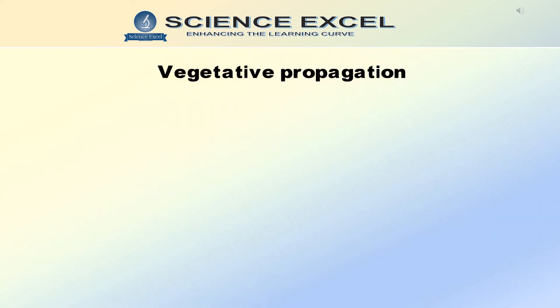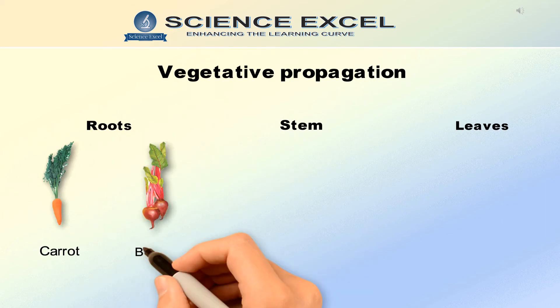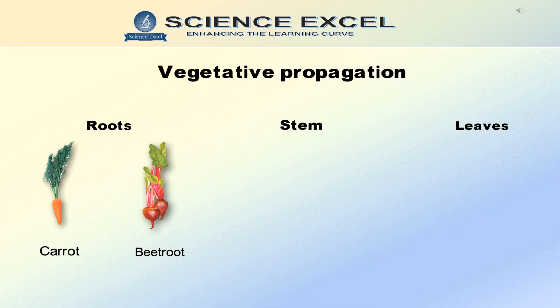Vegetative propagation takes place with the help of vegetative parts of the plant like the root, stem, leaf, and bud. Roots like carrot and beetroot are also known as modified roots or tubers. These tubers propagate in the soil. The buds on the root grow as leafy shoots above the ground, which gives rise to a new plant.